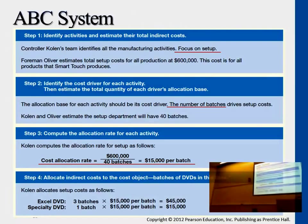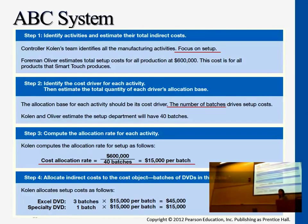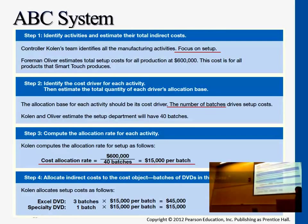Let's take a look at another example. The first step: determine the activity. Let's say we're focusing on setup costs now — setting up the machine, preparing the software for burning the DVDs. Setup cost is the activity, and the driver determined by management is batches. You can think of those as job orders. The more job orders requested by customers, the more setup costs there will be for this production line. The total setup costs estimated for the year is $600,000, and the total estimated batches are 40. So the per-batch setup cost rate is $15,000.